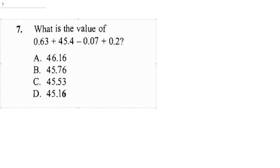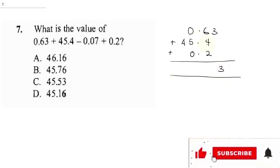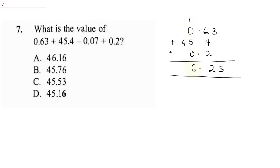The next question asks for the value. First, we add up the decimal places — make sure you arrange them correctly. We have 0.63, plus 45.4, plus 0.2. Adding these up: 3 plus 4 is 7... 6 plus 4 is 10, plus 2 is 12 — write 2 and carry 1 — giving us a running total of 46.23.